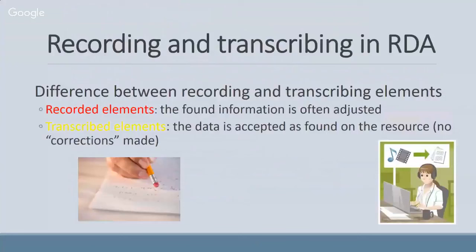Another change in how we as catalogers think about and perform tasks is in how we record information. Under AACR2, catalogers would adjust or correct the information they entered into a record. With RDA, we are to transcribe the information and not correct it — what we see is what we put into the record. We can provide additional access points under a corrected misspelled word, but we don't correct the title as we enter it in the 245 field. We would add a 500 field and perhaps an additional title access point with the corrected title.